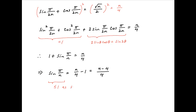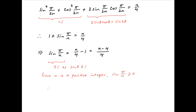Since sin of any angle is always less than or equal to 1, sin(π/n) ≤ 1. Also, since n is a positive integer, π/n lies between 0 and π, where sin is positive. Therefore sin(π/n) ≥ 0. So sin(π/n) is greater than or equal to 0 and less than or equal to 1.